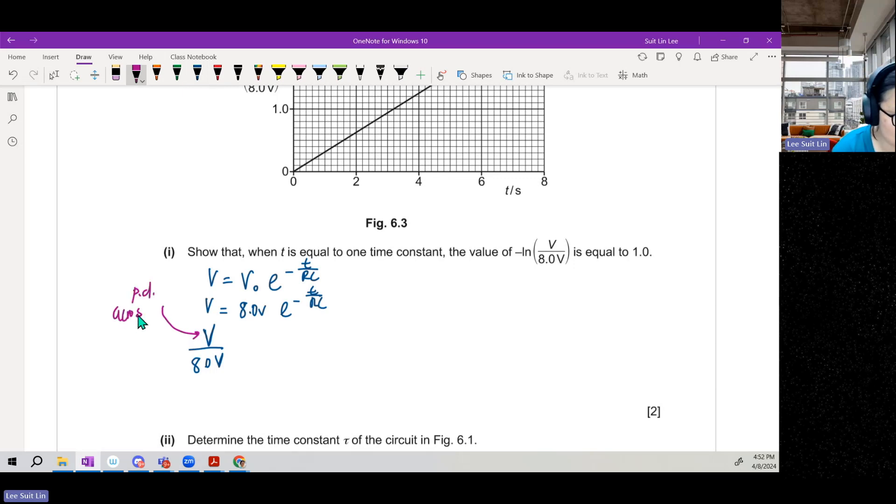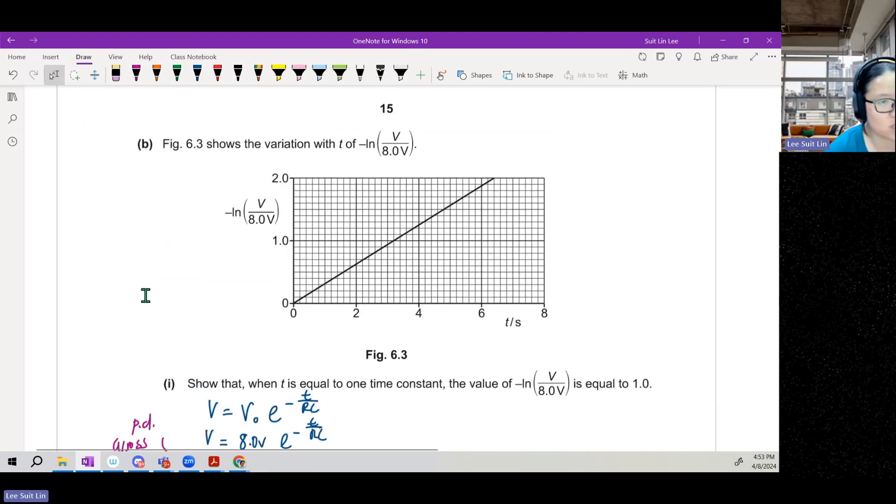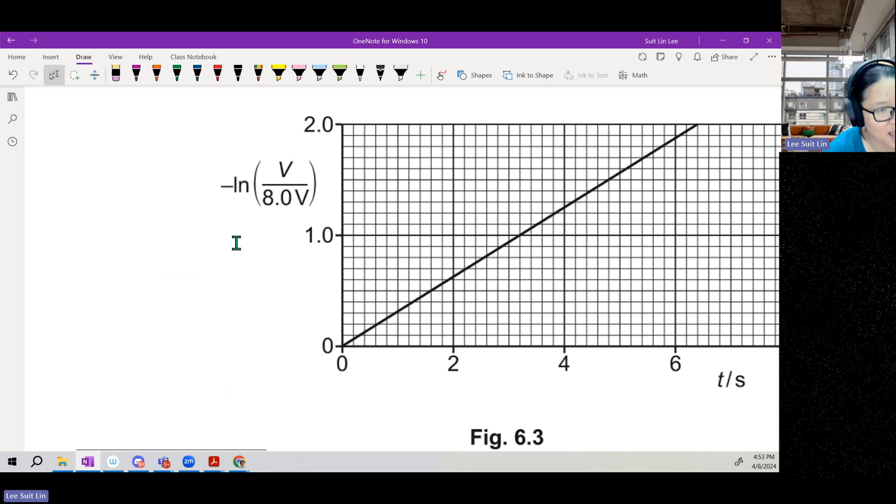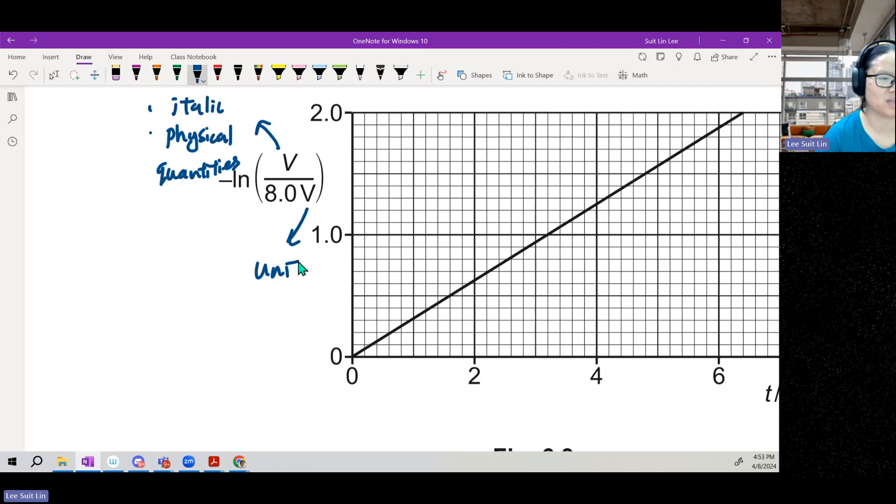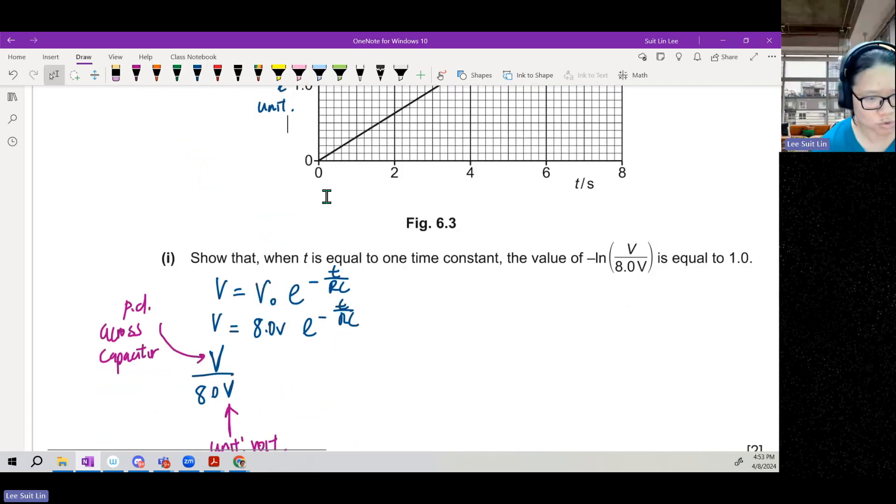This V is a variable, potential difference across capacitor. This V is a unit, volt. My dudes, you don't cancel a potential with a unit. Teacher, how I know? If you zoom in and you stare carefully at these two Vs, one is italic and one is not. This V is italic. Italic means it represents a physical quantity. We don't talk much about this because when you write, I don't even know what that means. This V is not italic, so it's a unit. Just think it through or look at it carefully. Do not cancel.